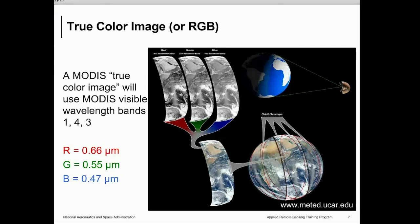In today's talk, we will focus on visual imagery created using channels in the visible part of the solar spectrum. Typically, the visible part ranges from 400 nanometers to 700 nanometers. To simulate what our human eyes can see, we combine the red channel, the green channel, and the blue satellite channel into corresponding display channels, and as a result we get a true color image. In order to simulate what the human eye can see, we need measurements in these three channels: red, green, and blue.